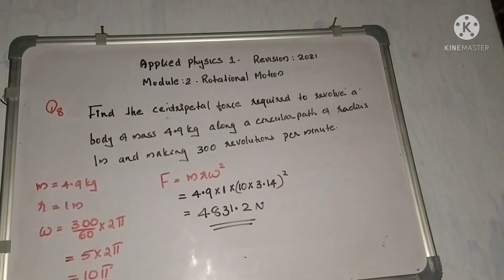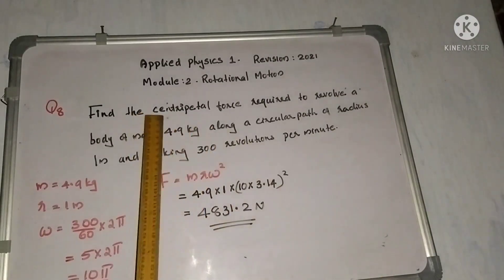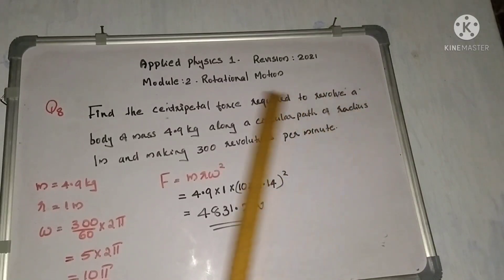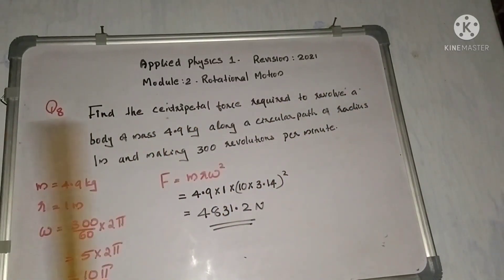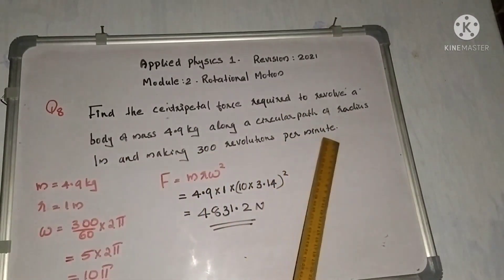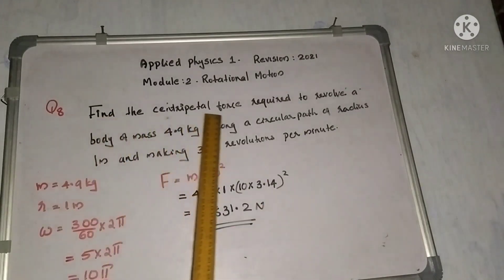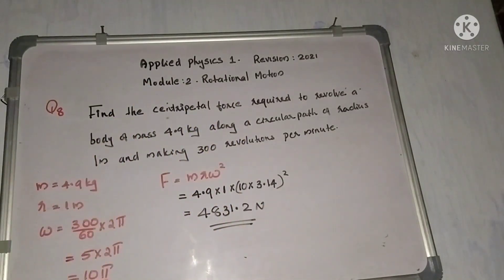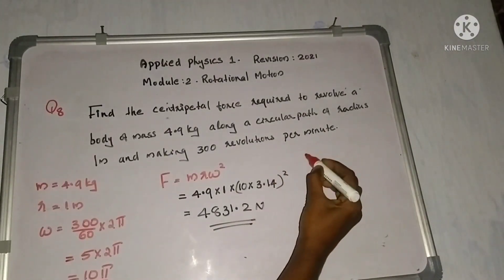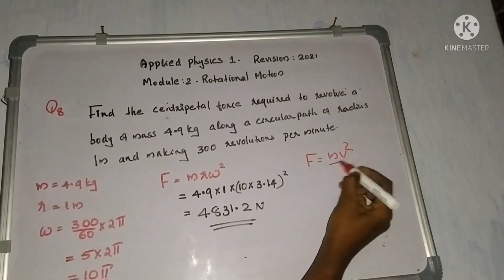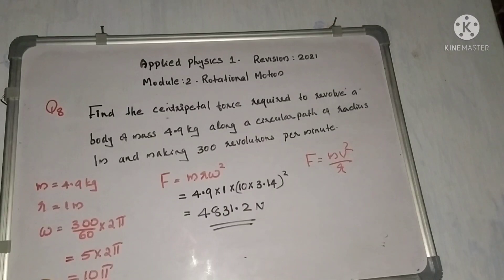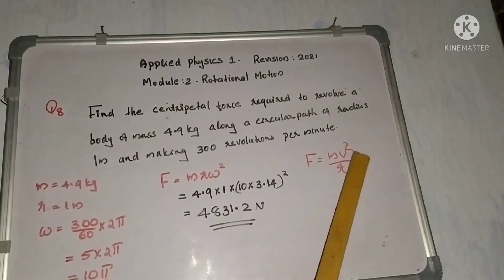Problem 8: find the centripetal force to revolve a body of mass 4.9 kg along a circular path of radius 1 m making 300 revolutions per minute. Centripetal force F = m × r × ω². We identify mass, radius, and angular velocity from the given values.